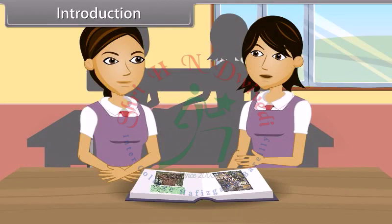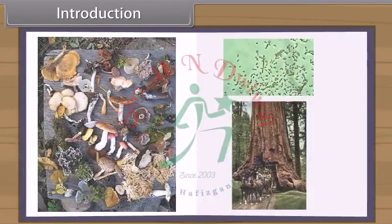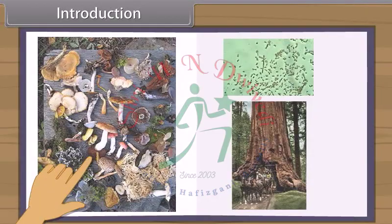We all see a wide variety of plants and animals around us. There are more than 1 million species of animals around the whole earth and about half a million species of plants on earth.